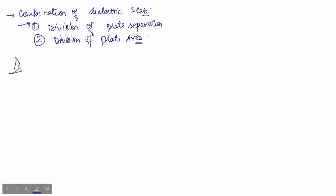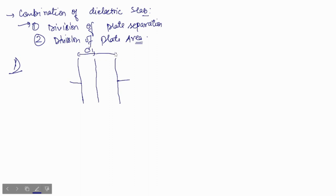So we will first state case number one: division of plate separation. Suppose this is your capacitor and your plate separation has been divided into parts — this is distance d1, distance d2, with dielectric constants k1, k2. Now you need to find the equivalent capacitance for this case.